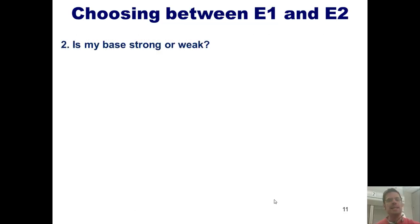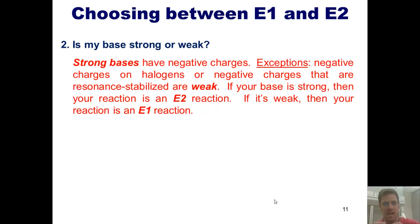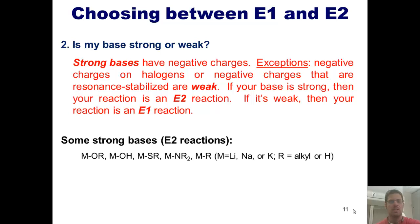If it happens to be one of those scenarios, move on to question number two: is my base strong or weak? Strong bases have negative charges — specifically localized, potent negative charges that are not resonance stabilized and not attached to a halogen. Negative charges on halogens or resonance-stabilized charges are generally weak. If your base is strong, the reaction will be E2. If it's weak, the reaction will be E1.